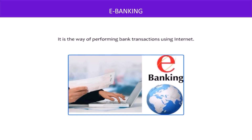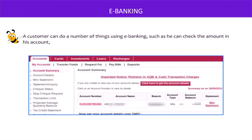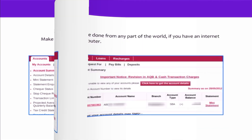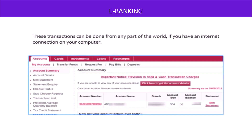E-banking simply means you don't need to go to a bank in person. A customer can do a number of things using e-banking, such as checking the amount in his account, making a fixed deposit, transferring money, applying for loans, paying bills, etc. These transactions can be done from any part of the world — all you need is an internet connection on your computer.